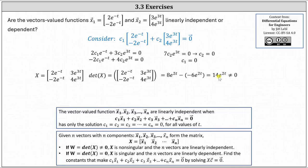Simplifying we have 14e^(2t), which is not equal to zero, showing once again the two vector valued functions are linearly independent.